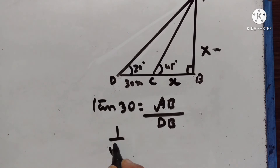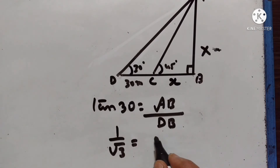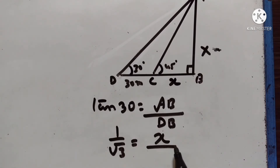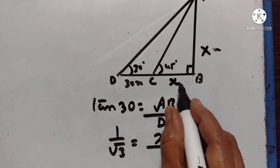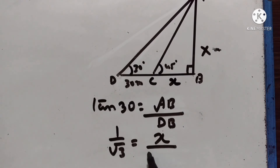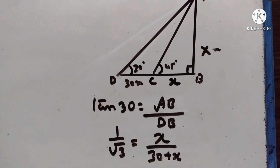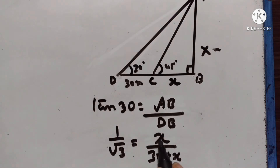Tan 30 is equal to AB upon DB. Tan 30 is equal to 1 upon square root of 3. AB is equal to x and DB is equal to 30 plus x. So 30 plus x is equal to square root of 3 times x, by cross multiplication.